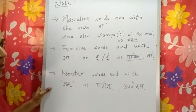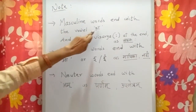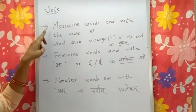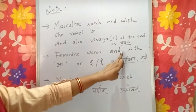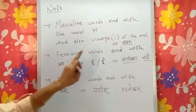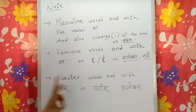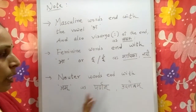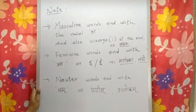To remember: words which end with the vowel 'a' and visarg at the end are called masculine words. Words which end with 'ā' or 'ī' are called feminine words. And the words which end with 'am', as in parnam and upanetram, are called neuter words.